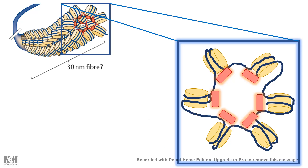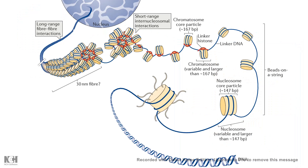Apart from core histones, there are also linker histones, which is histone H1. Linker histones interact with each other and help in compaction — from a beads-on-a-string structure, the chromatin forms a 30 nanometer cable solenoid structure. This compaction is aided by the H1 linker histone, which helps in higher-order folding and packaging of the chromosome inside the nucleus.